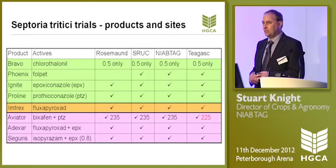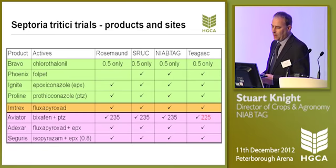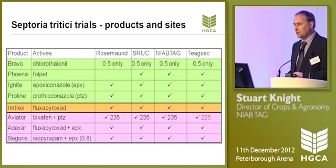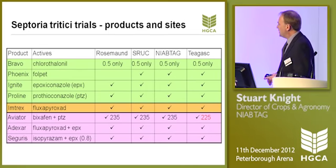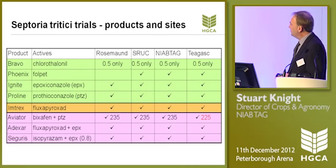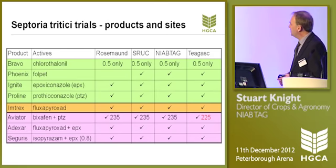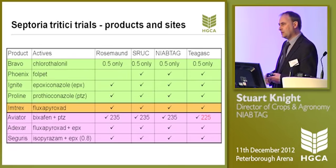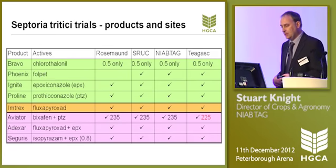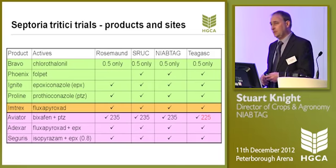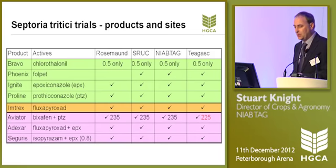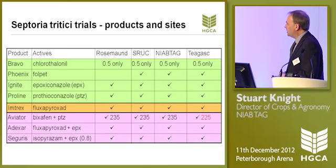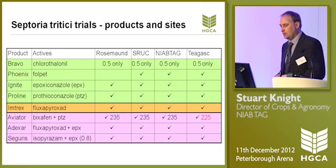Septoria tritici is our number one foliar disease on wheat, so I make no apologies for starting there. We have four sites where we test products against septoria tritici — two of them in England, Rosemaund in Herefordshire and NIAB TAG, a site in Sutton Scotney in Hampshire, then a site in Scotland and also the site in Ireland. We have a limited amount of space within these trials, so we can essentially test around eight products in full dose response curves.